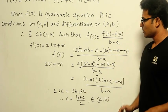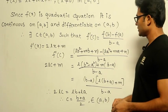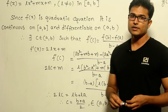Therefore, C, which is the mean value for this function, is (a + b)/2, which definitely falls in this range.